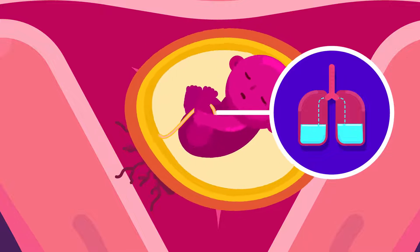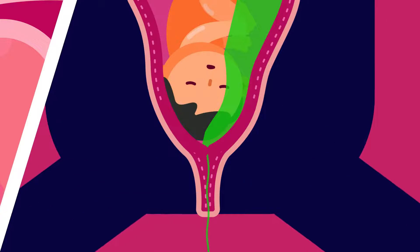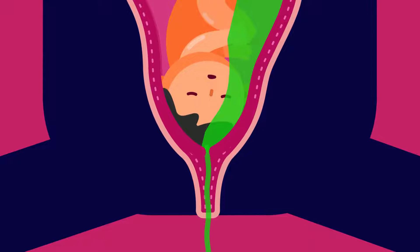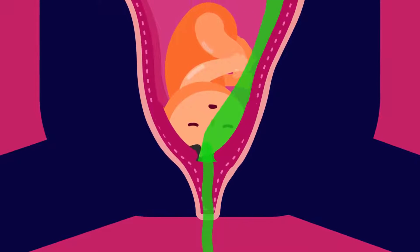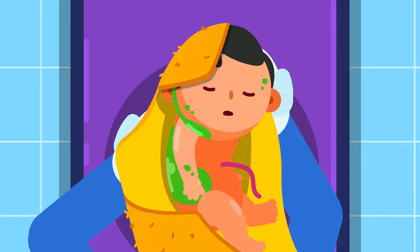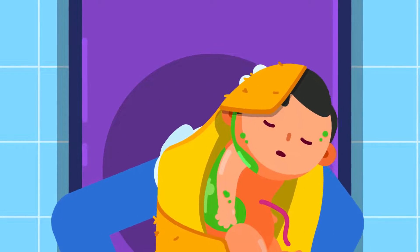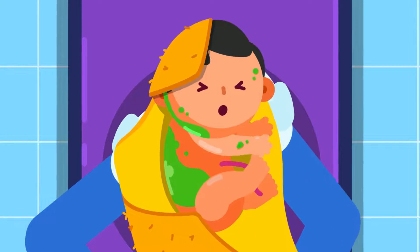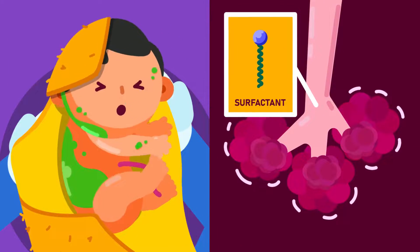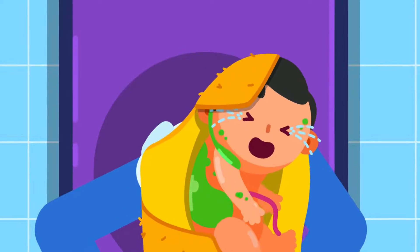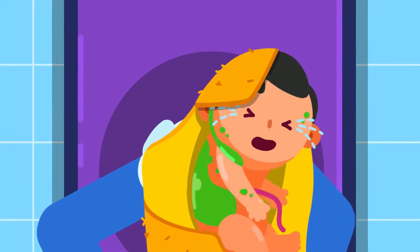The amniotic fluid also fills the baby's lungs and helps them to develop. During birth, the amniotic fluid plays a part by lubricating the birth canal and reducing friction. Most liquid in the lungs is squeezed out as the baby is born. As the baby begins to take in air, any liquid left in its lungs is absorbed by the body or coughed out. The baby's first cry is a sign that the baby's lungs have started to work.